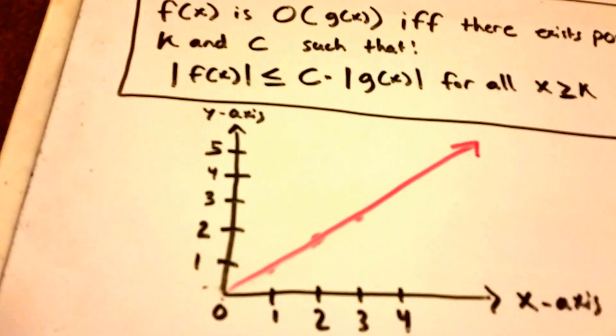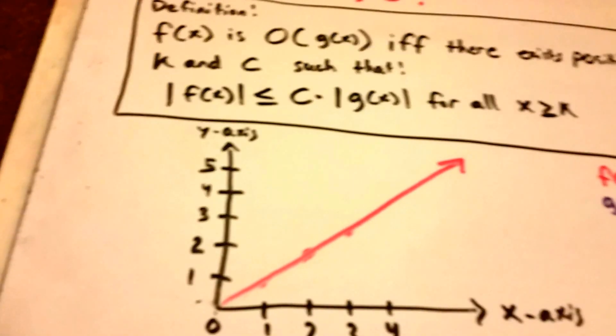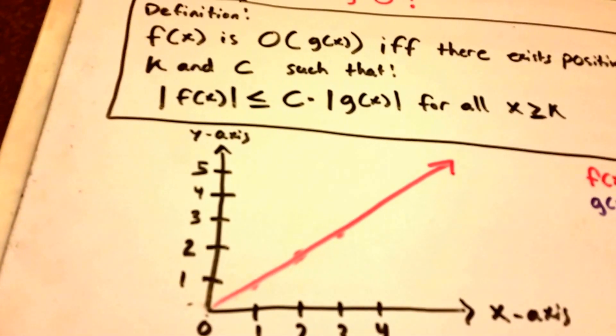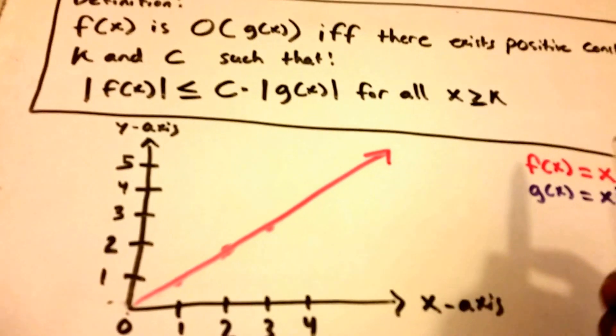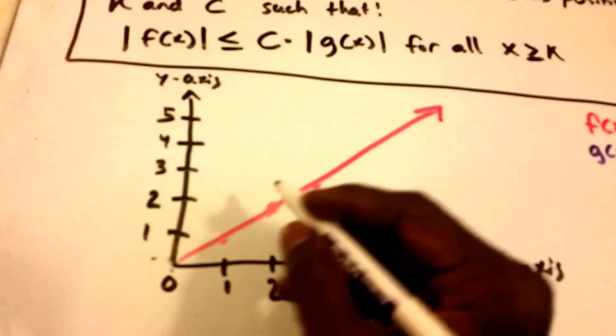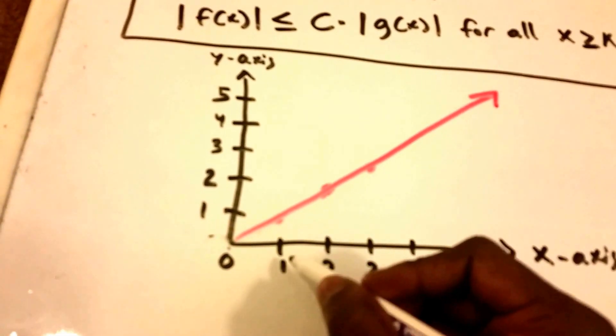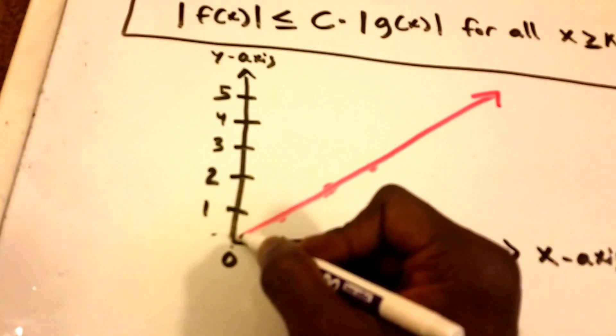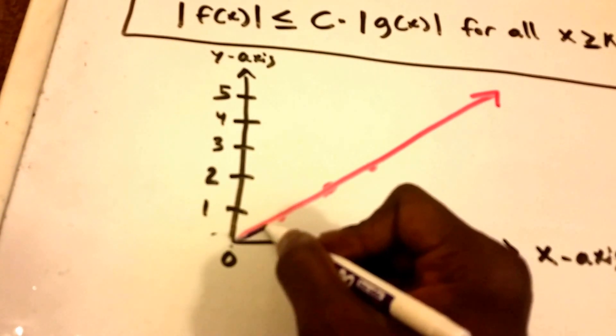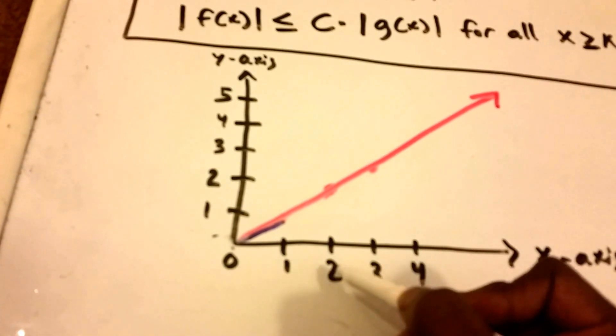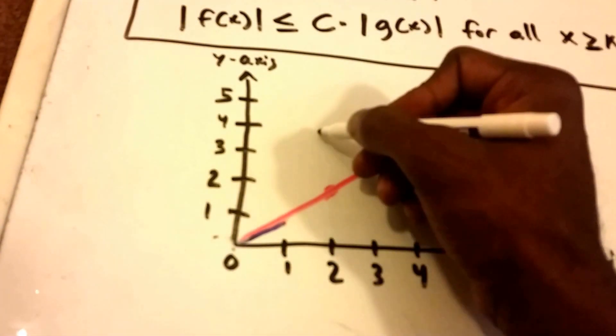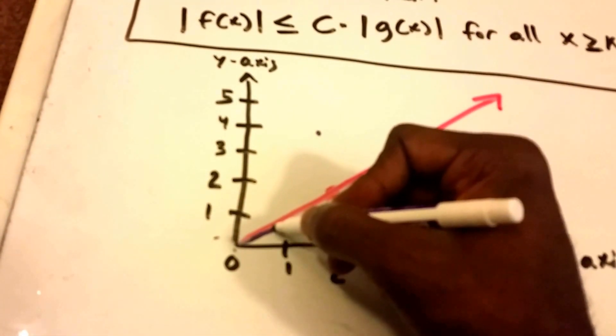All right, now let me take the other function which is G of X and let's graph that. So when G of X equals one, we get one, so G of X will be here as well. Now when G of X equals two, we get four, so that's all the way up here.